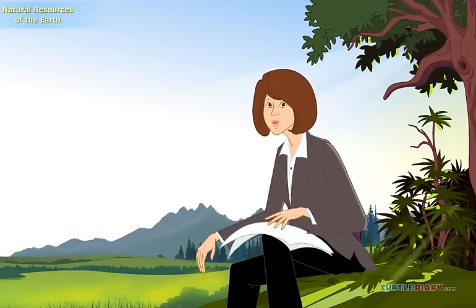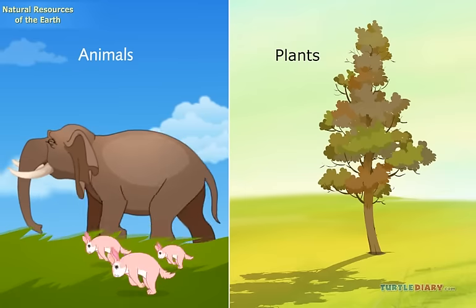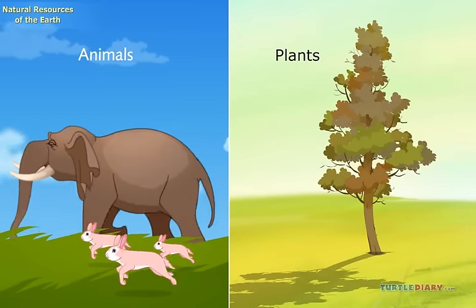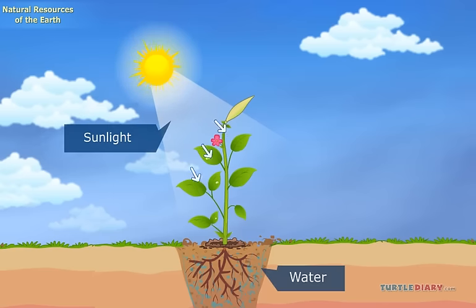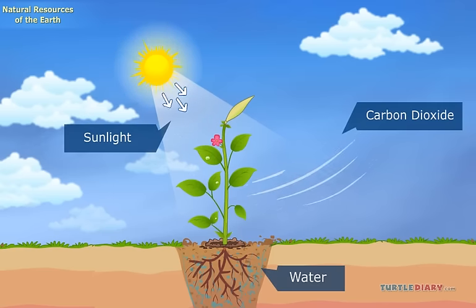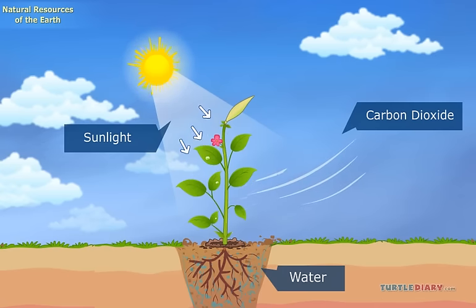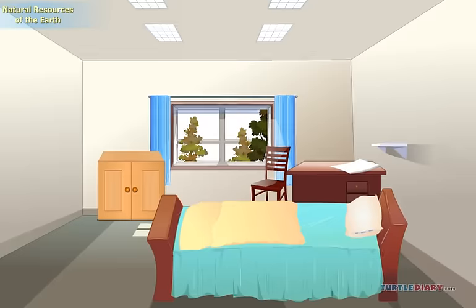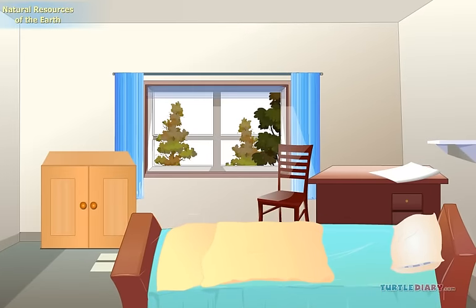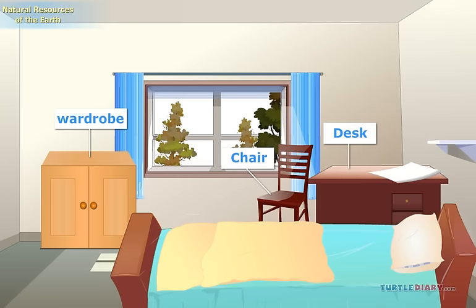How do we use these natural resources? All plants and animals use oxygen from air to breathe. Plants use sunlight, water from soil, and carbon dioxide from air to make their own food. We eat these plants, their fruits, and vegetables. We make use of wood obtained from plants to make different things like desks, chairs, wardrobes, etc. We also obtain paper from plants.